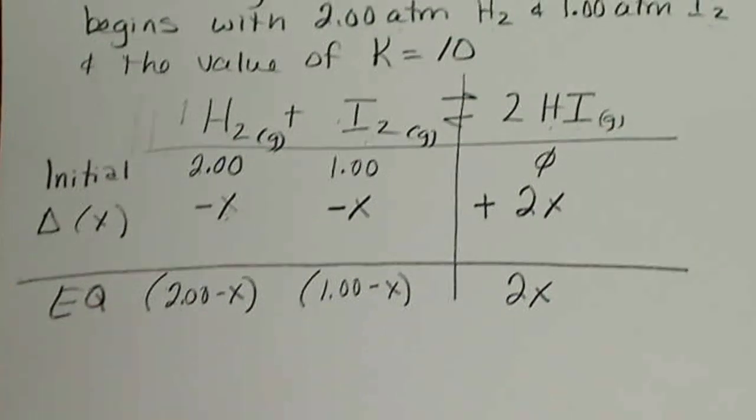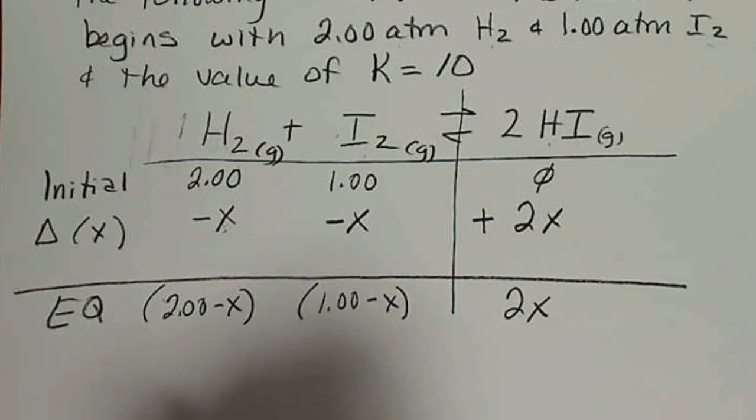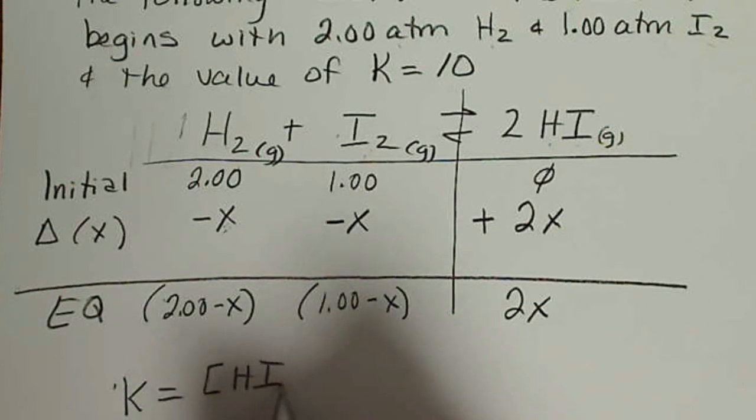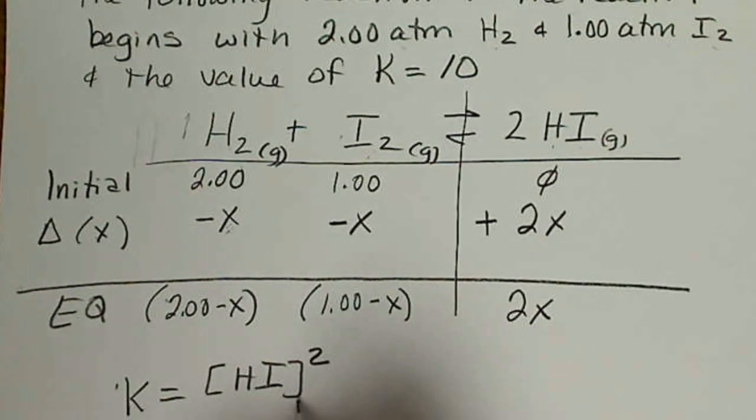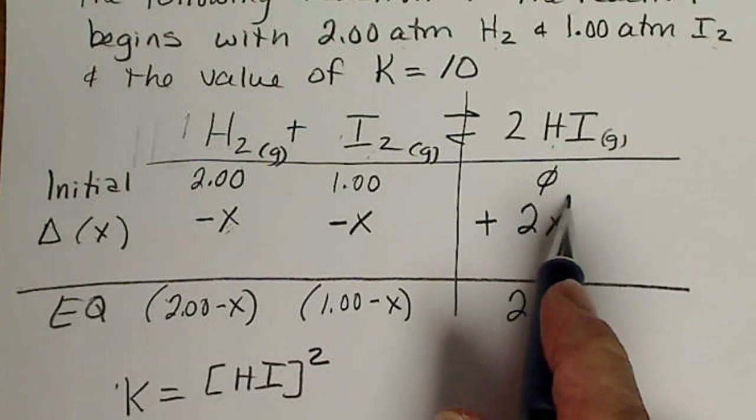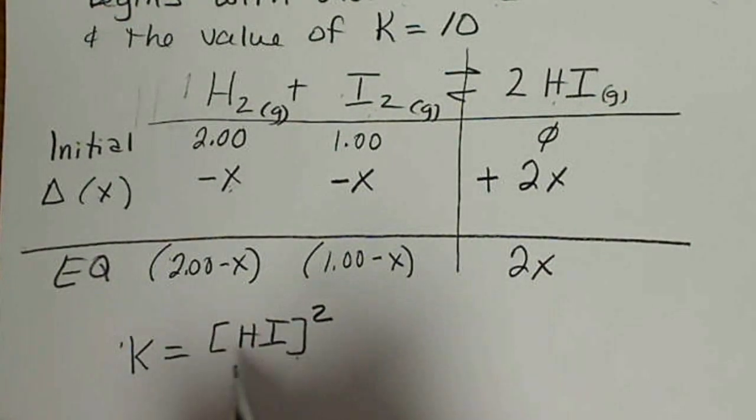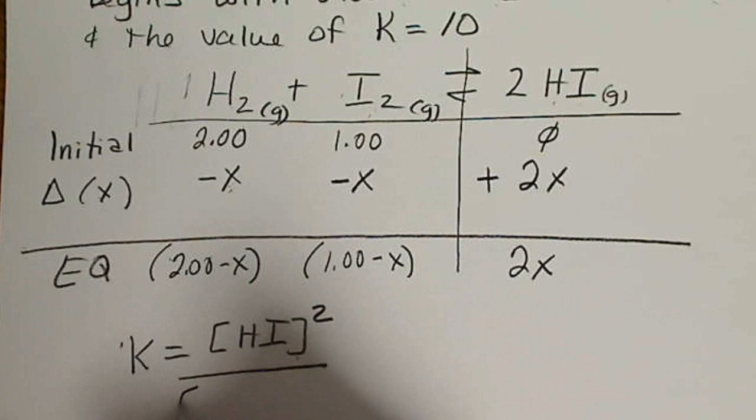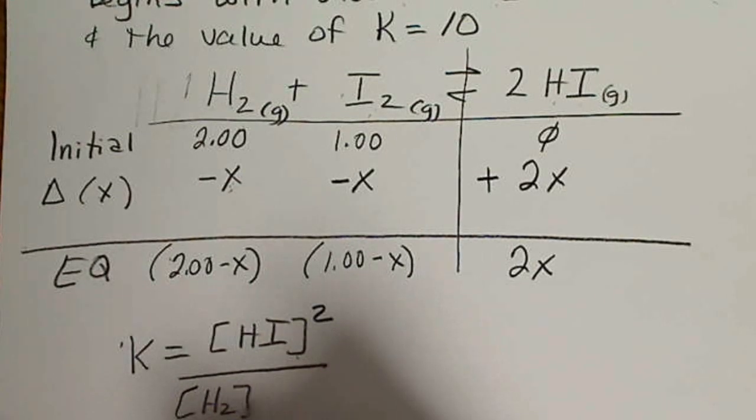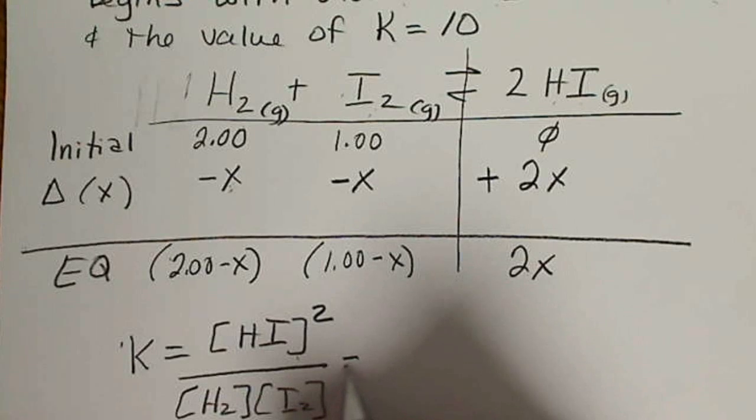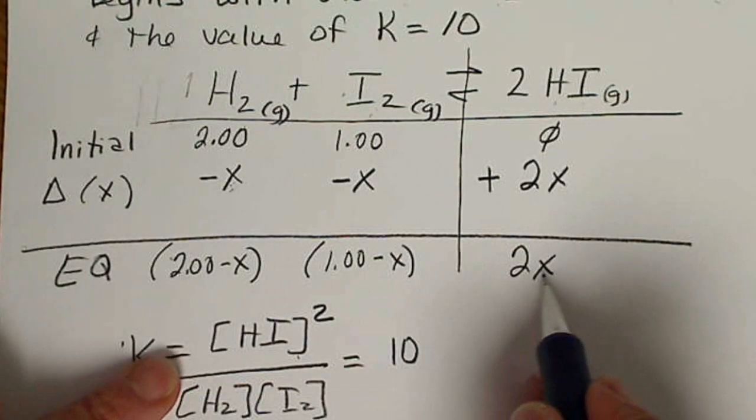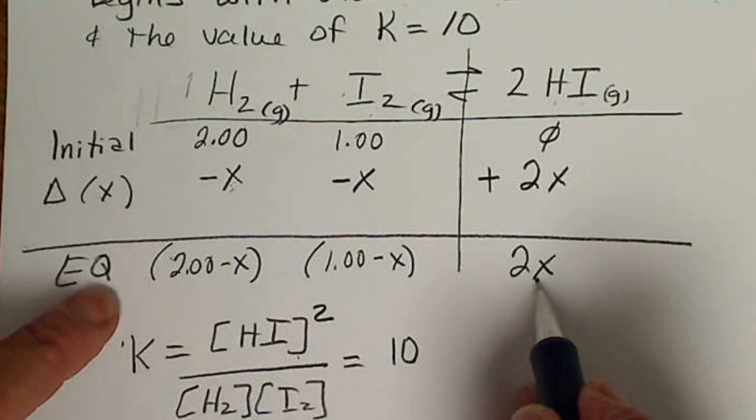And we have to be given the equilibrium constant in order to do this. So K is going to equal HI, and I'm using concentration values. I should be using pressures, but I'm using the symbols for concentration, but that's alright. And this is all over H2 and I2.